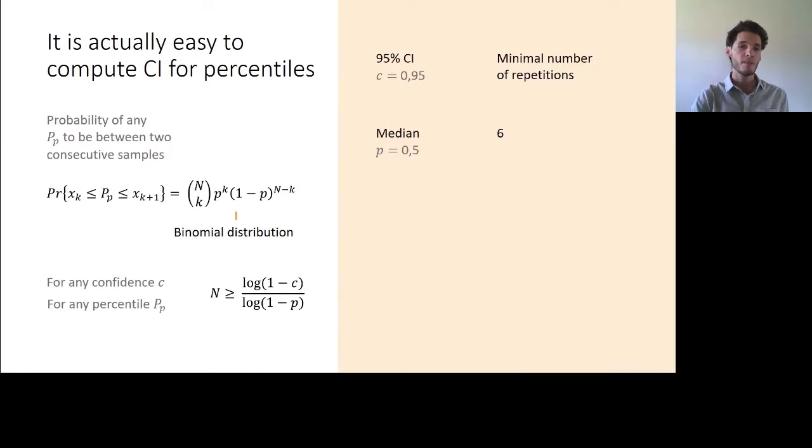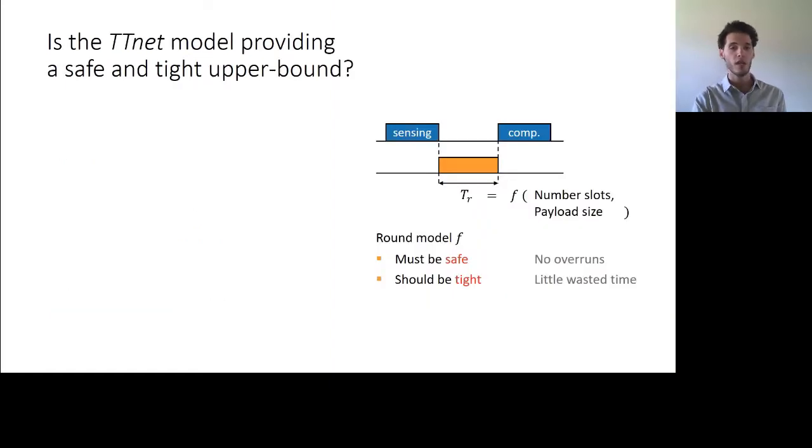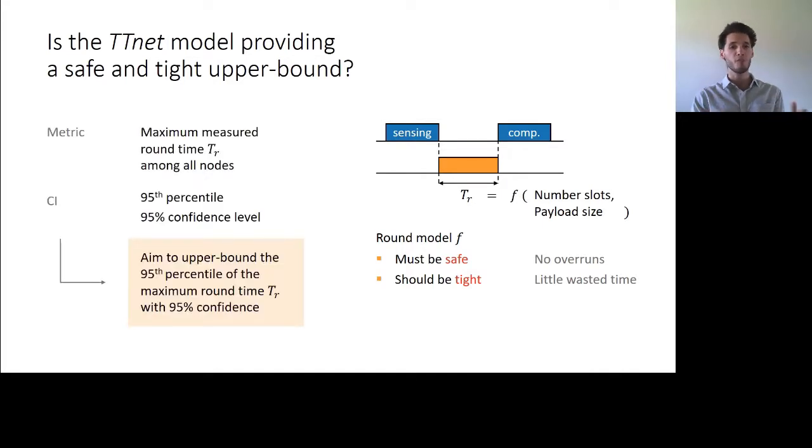If we want to estimate the median with a confidence level of 95%, this is rather easy. But we're not interested in the median, we're interested in the worst case execution time, which is like the 100th percentile. But the higher the percentile, the more challenging it is to actually provide a confident estimate. So in our case, we settle for a middle ground for the validation of the TTNet model by trying to confidently estimate the 91st percentile.